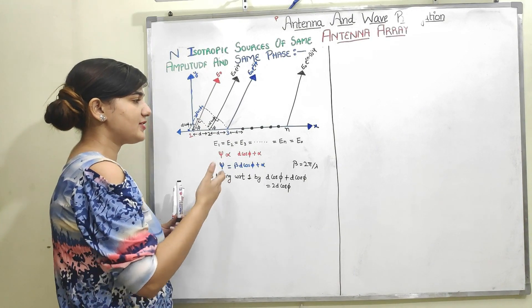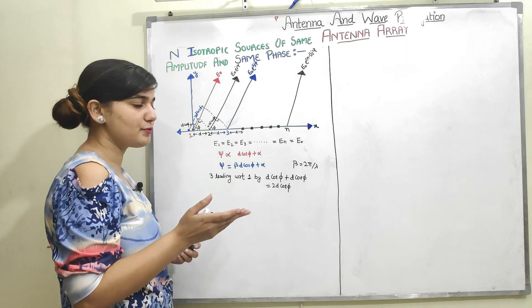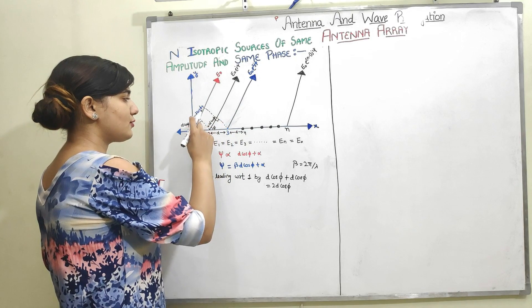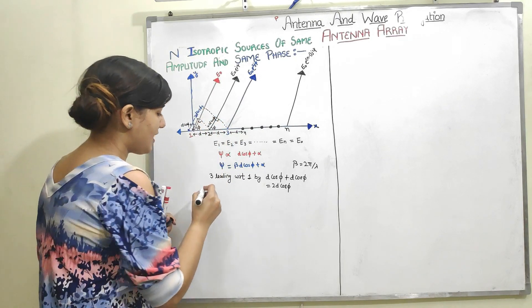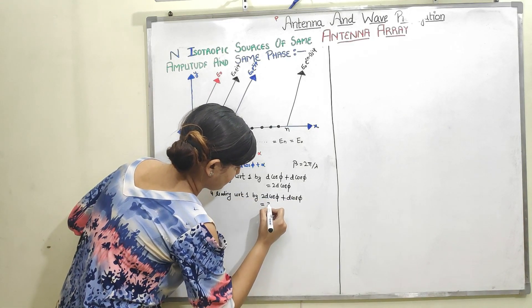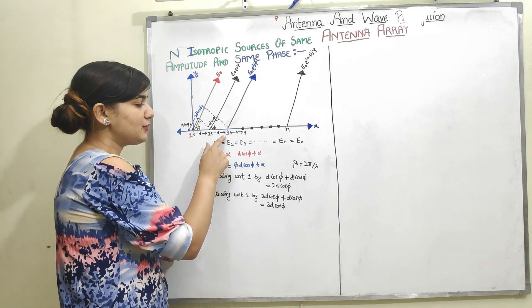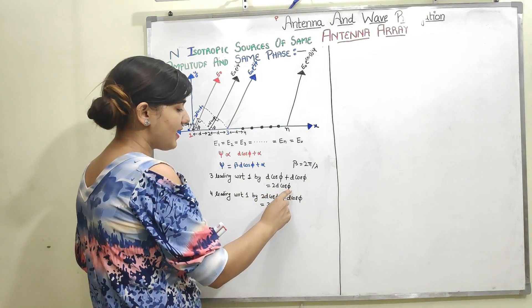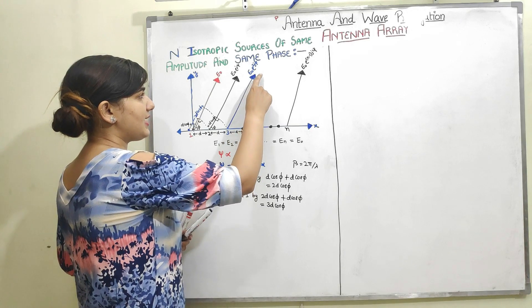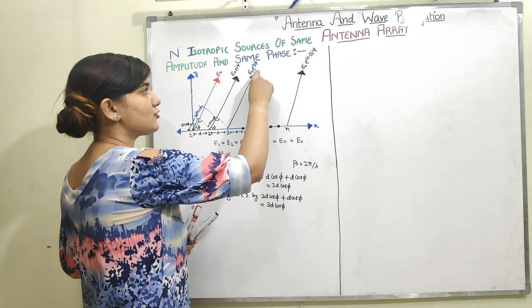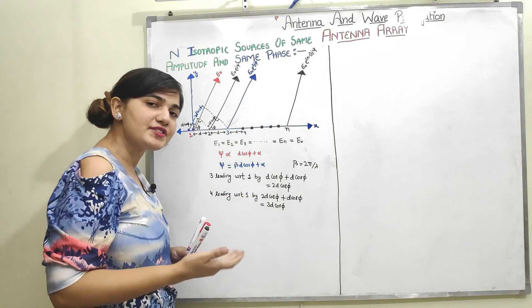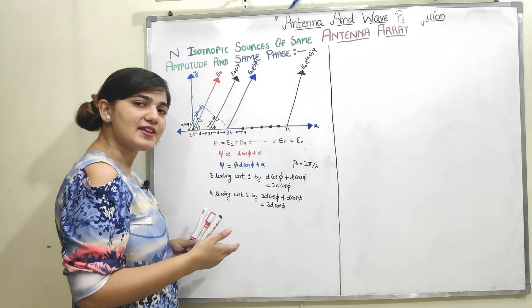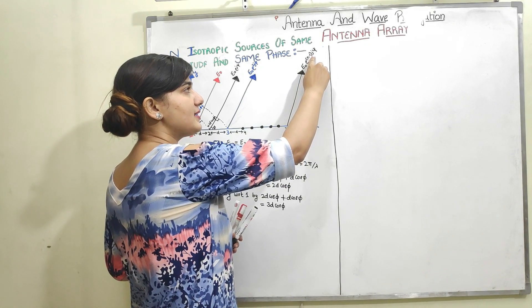Continuing this pattern, antenna 4 leads antenna 1 by 3·d·cos(phi), which is 3·psi. In general, antenna N leads antenna 1 by (N-1)·psi. So the electric field and phase of antenna N is represented as E0·e^(j·(N-1)·psi).